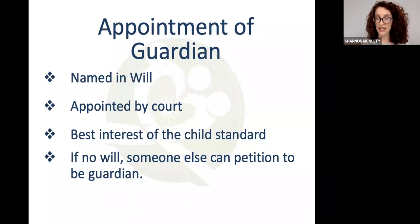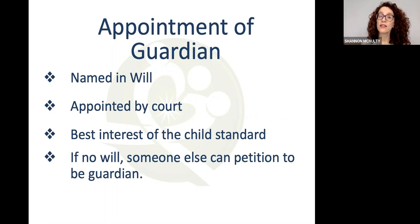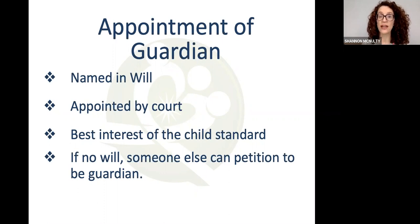A guardian is the person appointed if there is no parent able to care for the child. A guardian is named in the will, but must be appointed by the court. In most cases the person named in the will will be appointed, because the court weighs heavily the wishes of the parents. But the overriding standard the court applies is what is in the best interest of the child.